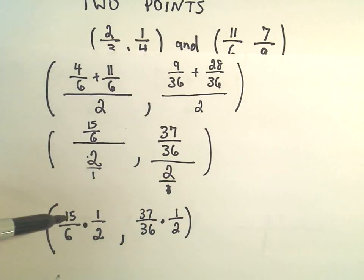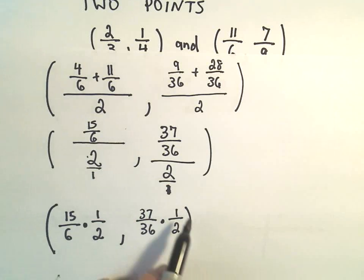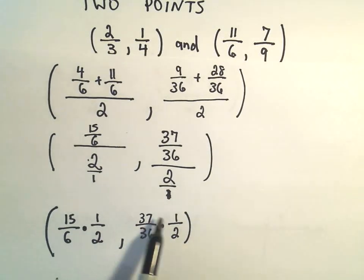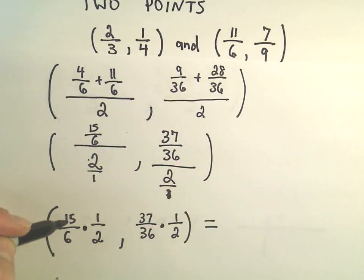And again to multiply, we just multiply across the top and across the bottom. Typically I would try to see if anything cancels out, but I don't see anything that will cancel in my 15 over 6 times 1 half. Likewise, I don't see anything that's going to cancel out in the second coordinate. So I'm just going to multiply them out.